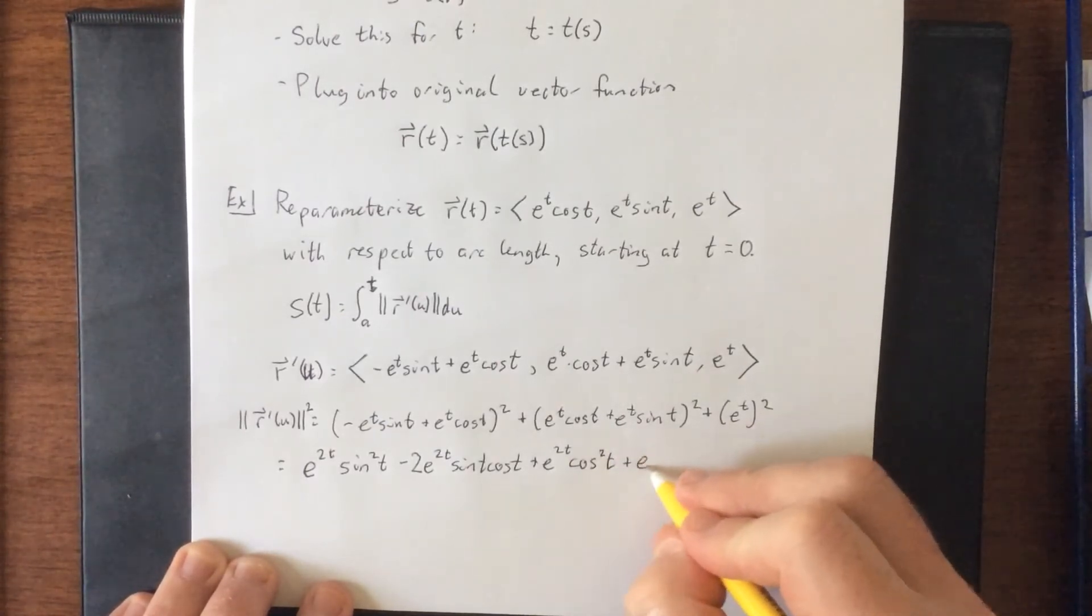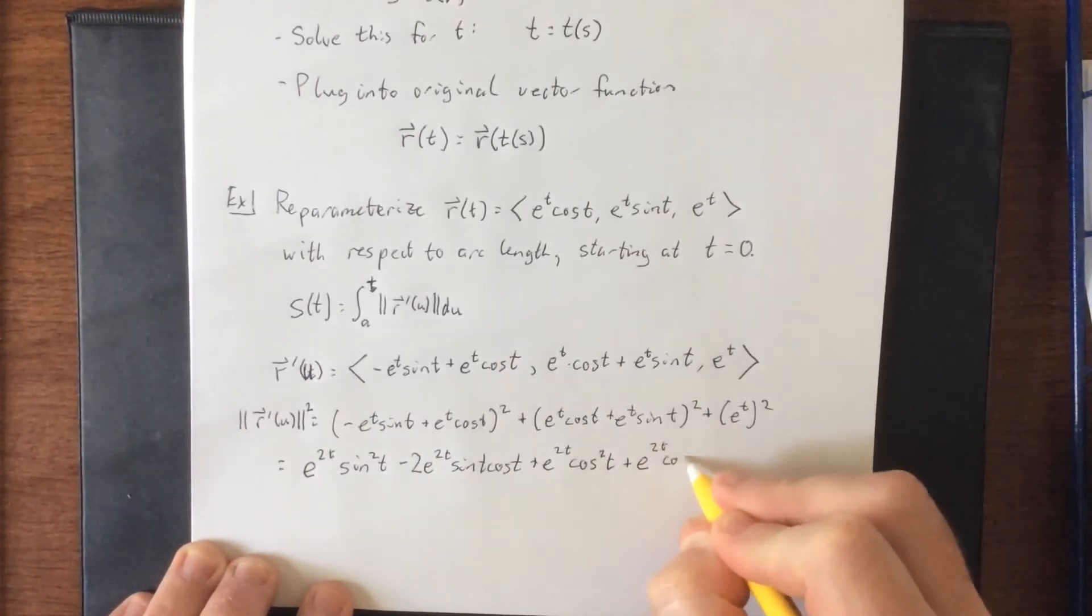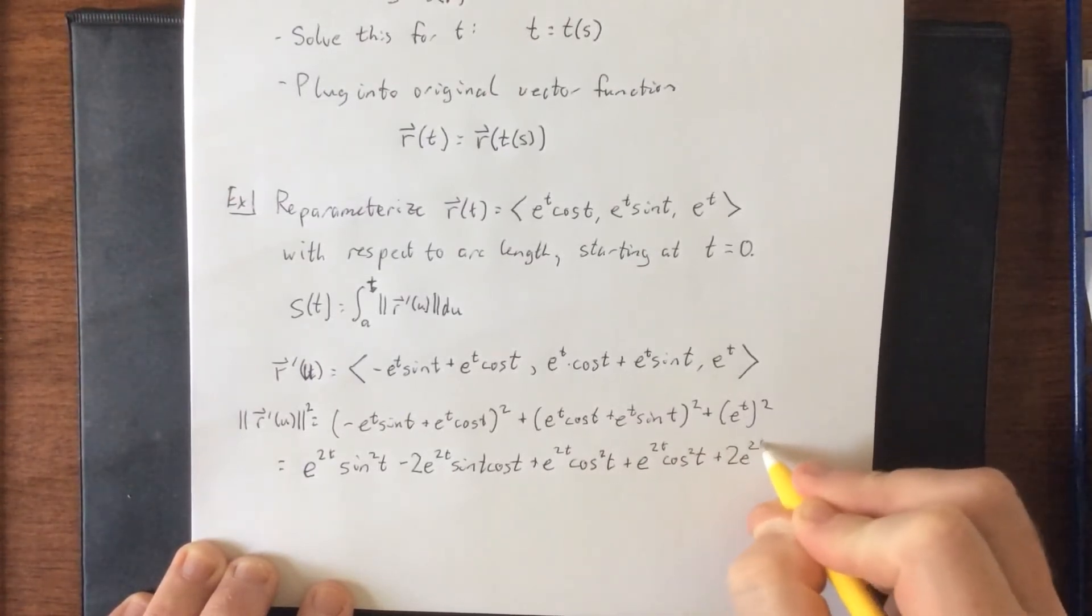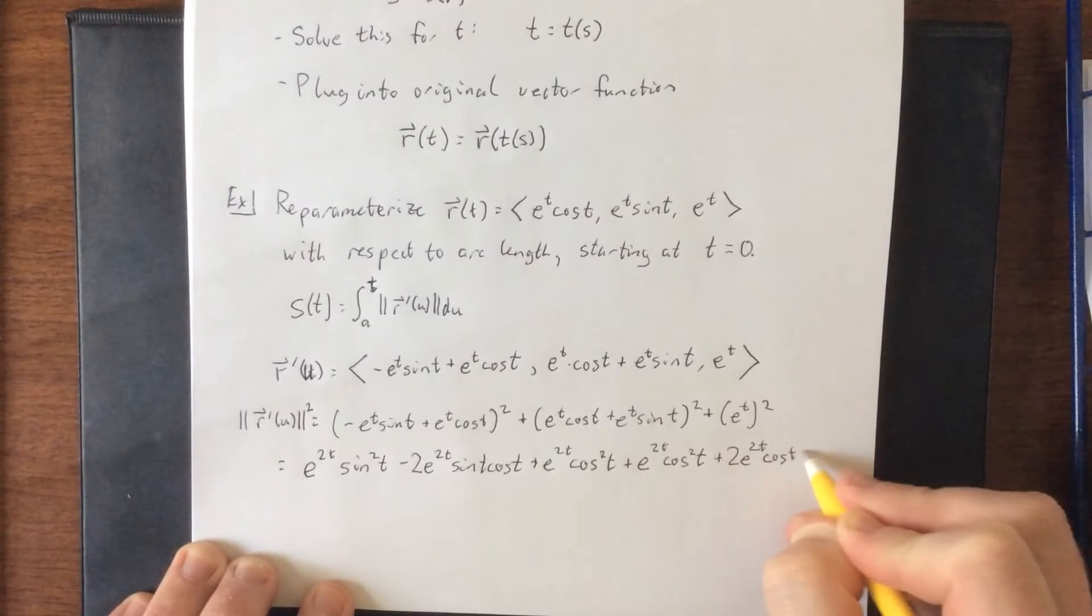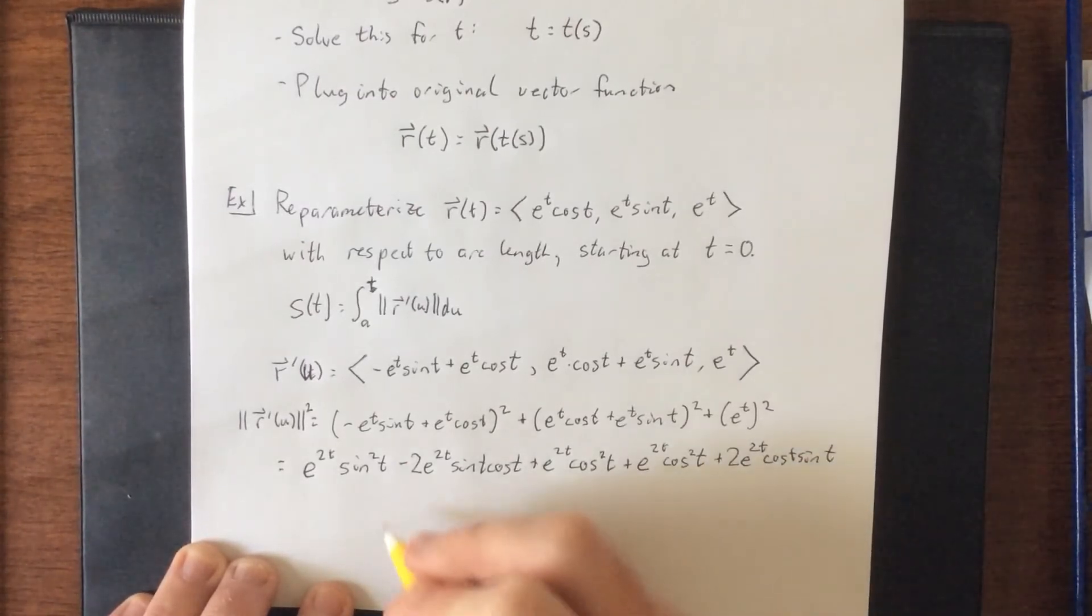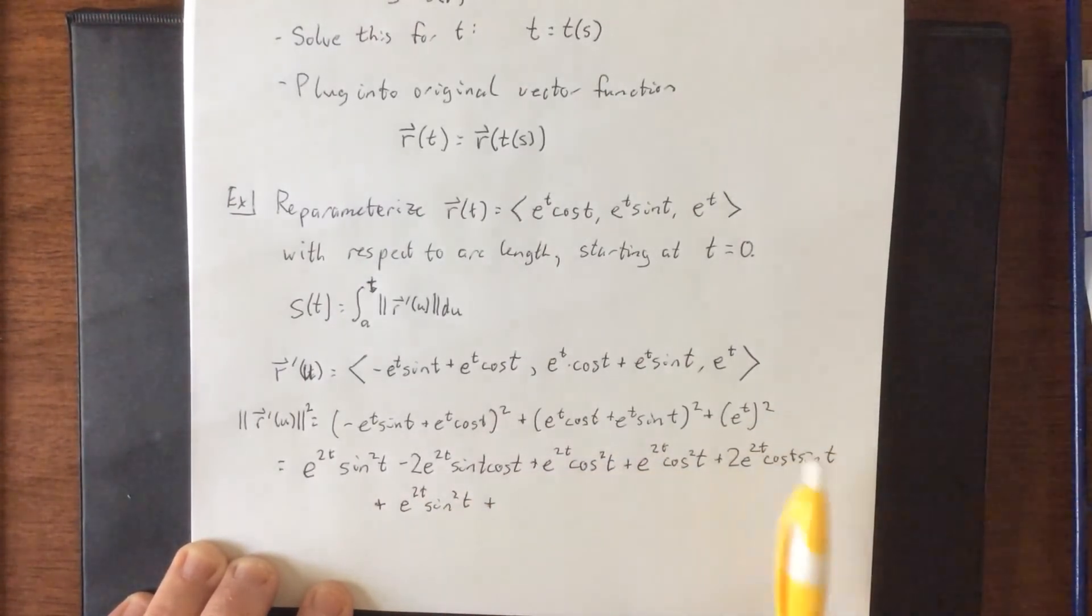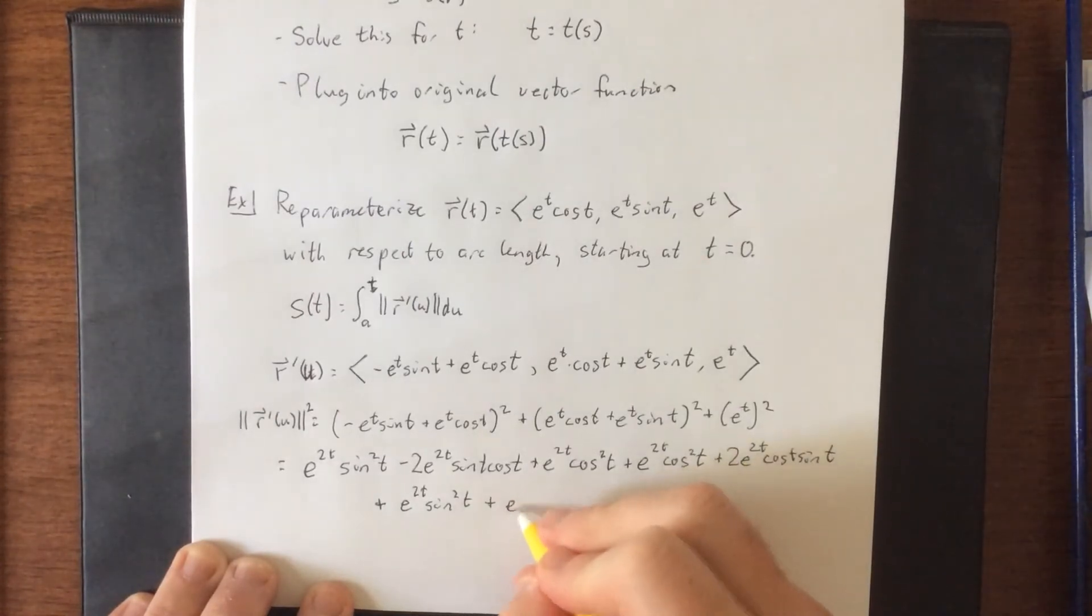Square this next one, we'll get e to the two t cosine squared t plus two e to the two t cosine t sine t, starting a new line, plus e to the two t sine squared t plus, then we square this e to the t, so e to the two t.